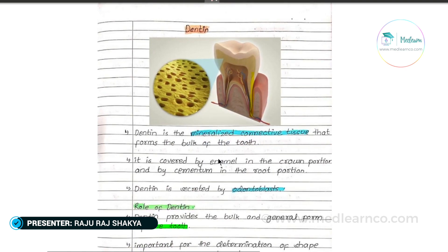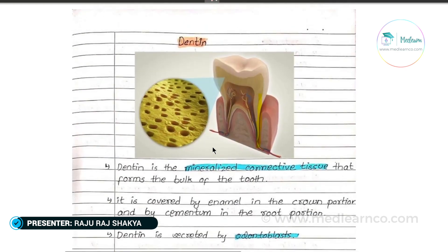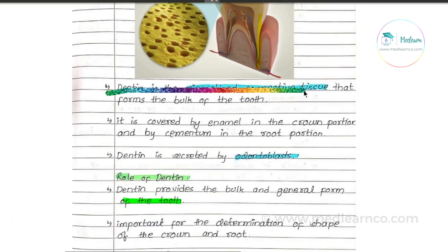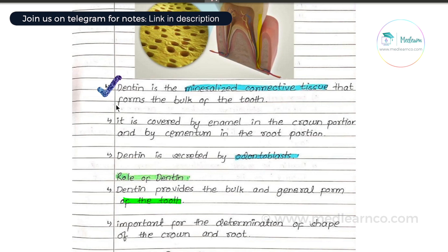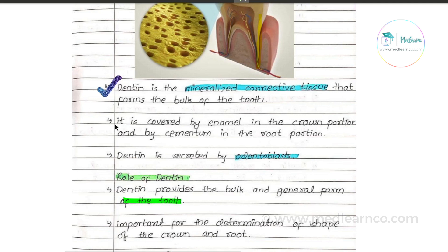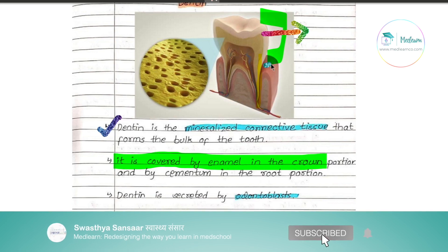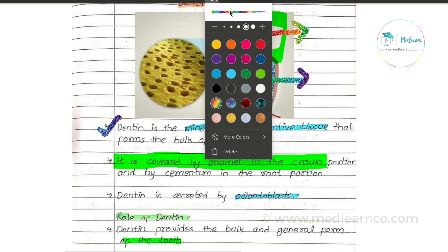Dentin. What is dentin? Dentin is one of the important structures of our tooth. Dentin is a mineralized connective tissue that forms the bulk of the tooth. It is covered by the enamel in the crown portion, and the root portion is covered by cement.